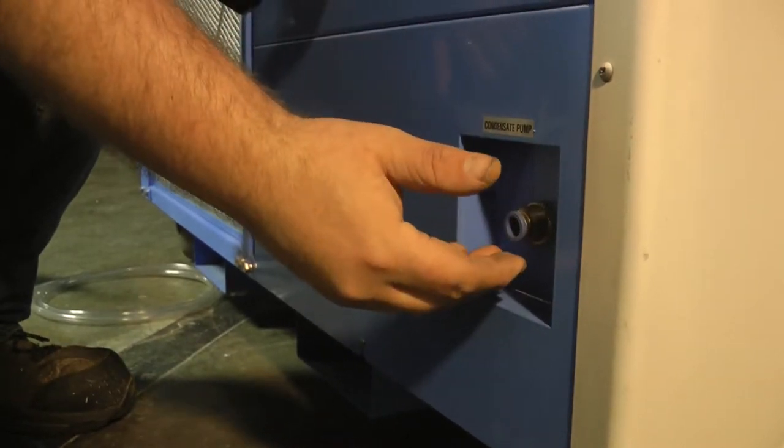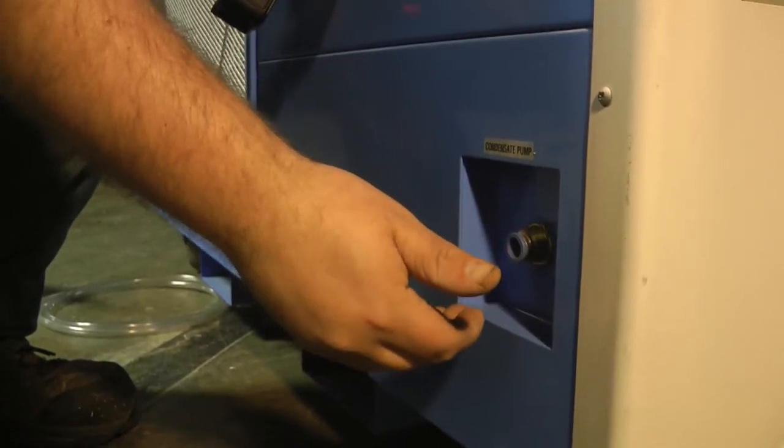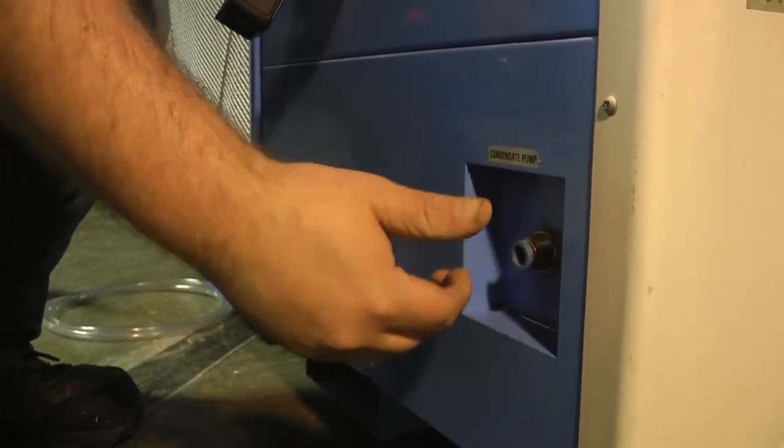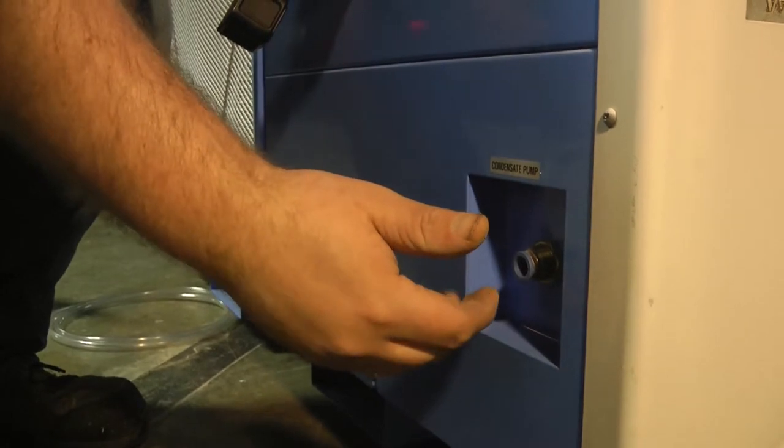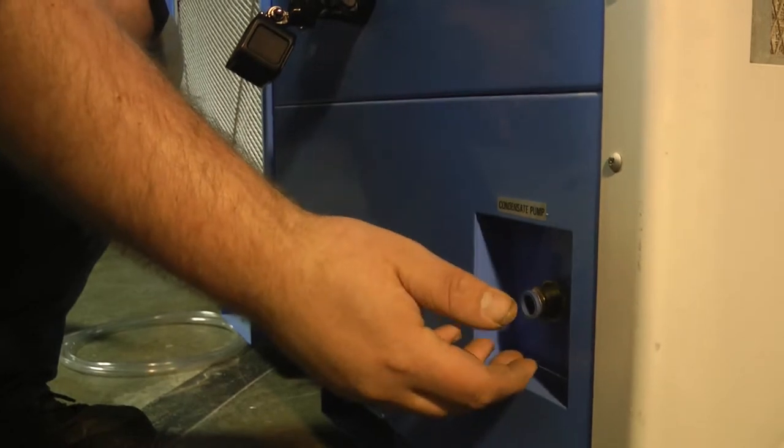So what tends to happen sometimes is it'll start leaking out of this fitting. I'm going to demonstrate how to go about correcting this and we're going to reroute your condensate line directly to the pump and remove this fitting altogether so we don't have any leaking problems.